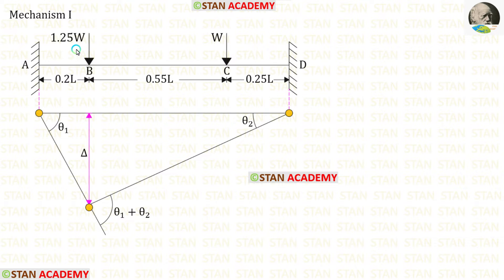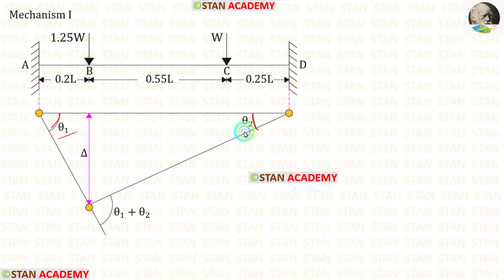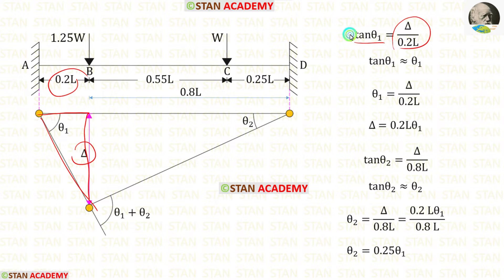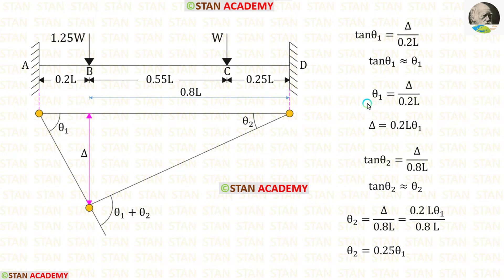In this mechanism, let us assume that the hinge occurs under the point load at point C. Let us keep this angle as theta 1 and this angle as theta 2, so this angle should be theta 1 plus theta 2. Let us keep the displacement due to this load as delta. Using this triangle, tan theta 1 equals delta upon 0.2L. Since theta 1 is small, tan theta 1 is approximately equal to theta 1, so theta 1 equals delta upon 0.2L.